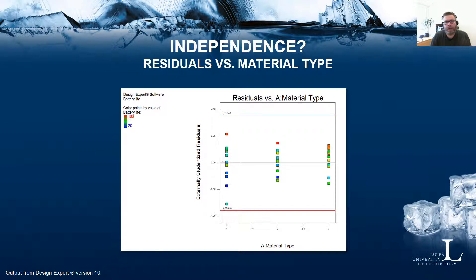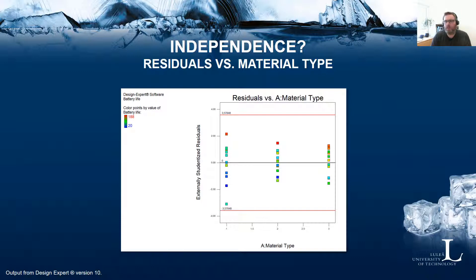Moving on, we can check the independence assumption by looking at a plot of residuals versus one of the design factors: the material type. What we would like to see is even variation or spread of the residuals between the different levels. Here we have three levels — material type one, two, and three. We again have this deviating observation that can trick our eyes into seeing a much larger variation for this material type, but it's only one observation.